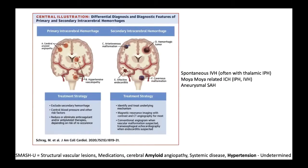When we categorize ICH, the main way is to think about it as either primary or secondary. Primary meaning there's not some other source causing the ICH. There's a mnemonic called SMASH-U that helps remember the different causes: structural vascular lesions (secondary causes where something is wrong with the blood vessels), medications (increasingly common as elderly populations live longer, things like Coumadin, Apixaban, and antiplatelet agents), amyloid angiopathy, systemic disease, hypertension, and undetermined.